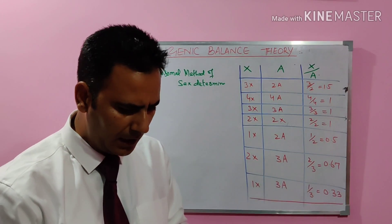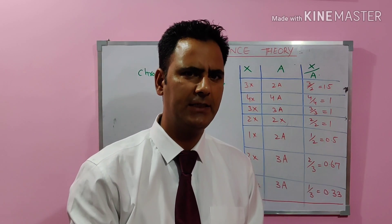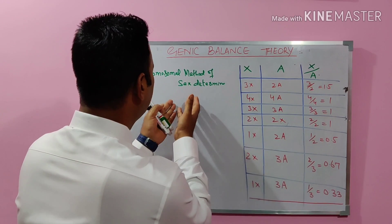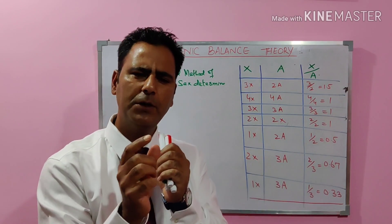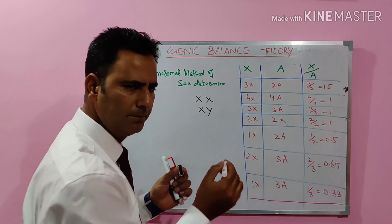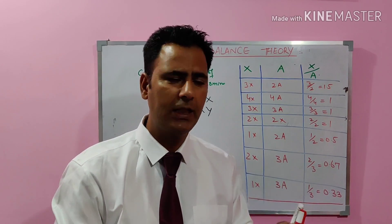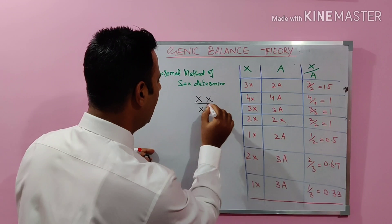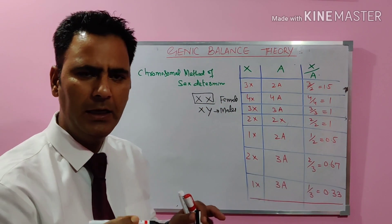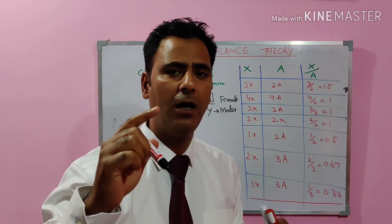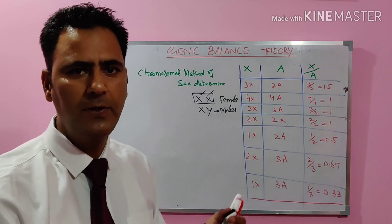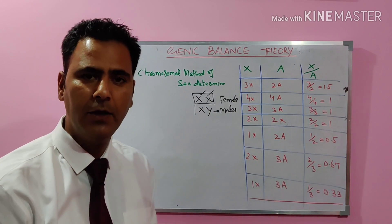So we have Genic Balance Theory. Before understanding this, we must understand what the chromosomal method of sex determination has said. As per the chromosomal method, it will be the sex chromosomes like XX and XY, because XX represents female and XY represents male.